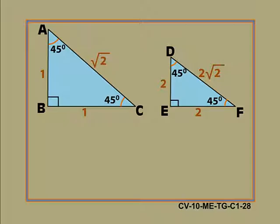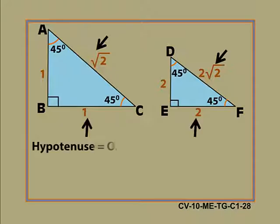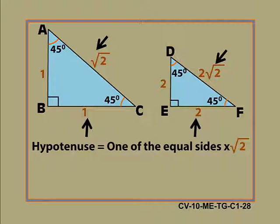Now look at the hypotenuse in both the triangles. That is root 2 and 2 root 2. In both the cases if we multiply one of the equal sides with root 2 we get the measure of hypotenuse. Observe the relation and check by yourself.